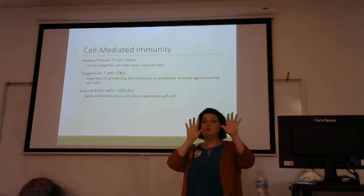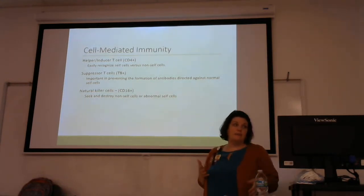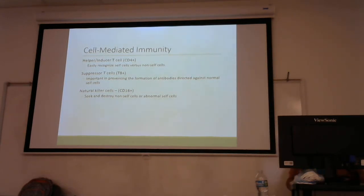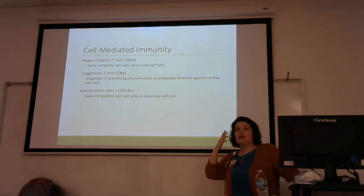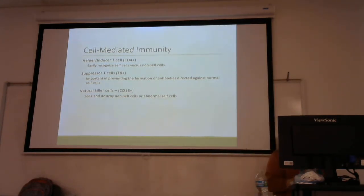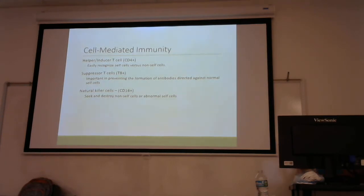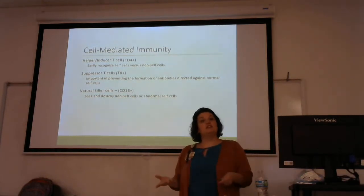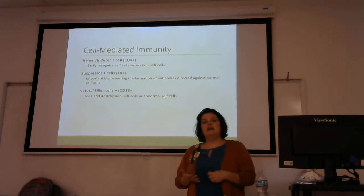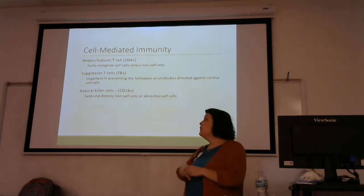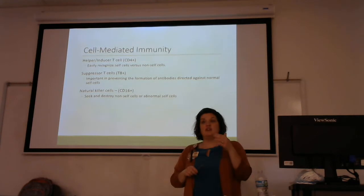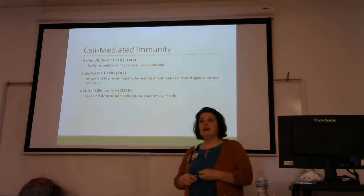Cell-mediated immunity is most effective in destroying virus-infected cells, intracellular bacteria, and cancers. It's also very helpful in stopping metastasis after exposure to a cancer-causing substance. You have helper T cells — your CD4 cell count — whose most important role is recognizing self versus non-self. Suppressor T cells (T8) keep things in check and help prevent the development of self-antibodies — antibodies against normal healthy cells. Natural killer cells (CD16) are most effective at destroying unhealthy, abnormal cells like cancer cells. All these cells are regulated by cytokines.